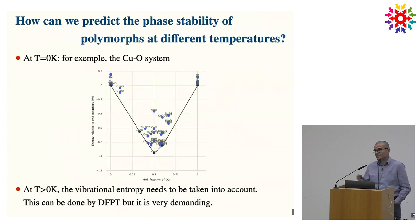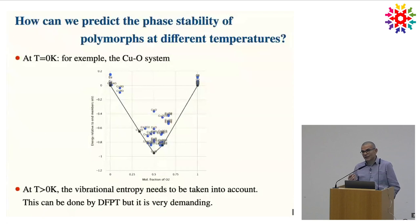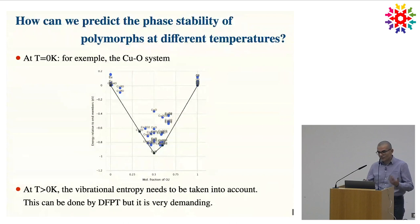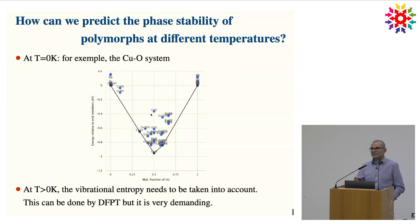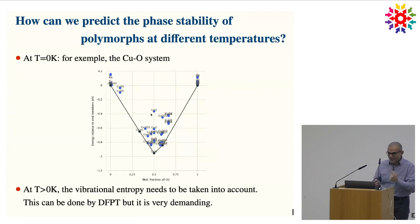For example, we are interested in looking at the stability of elements. We can compute energies at zero temperature from DFT and make a convex hull plot. This is the example of the copper oxide system: on one end you have purely copper structures, on the other purely oxygen, and in between the compositions, finding structures that are stable and will not dissociate. But that's at zero K because it's ab initio DFT.